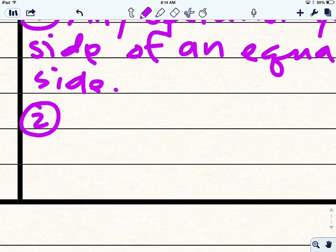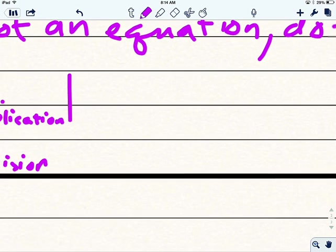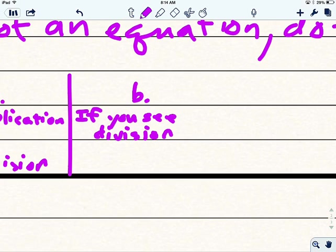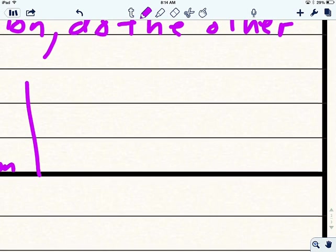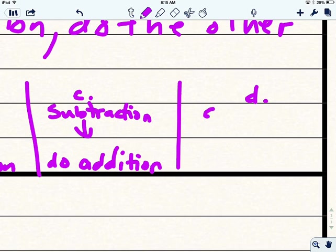The second rule, it's kind of going to be a list. We'll use some symbols. The first one is if you see multiplication, do division. Then, b, if you see division, do multiplication. And c, if you see subtraction, do addition. And that can sometimes get a little bit hairy. And when you get to a problem where that's going to become a problem, we'll help you out. And then, d, if you see addition, do subtraction.